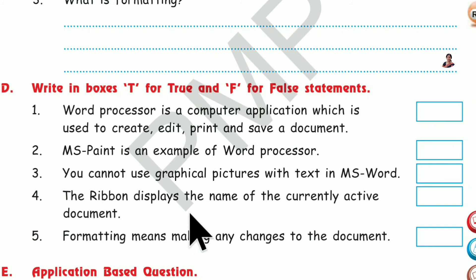Number 4. The ribbon displays the name of the currently active document. That is false. Number 5. Formatting means making any changes to the document. That is true.